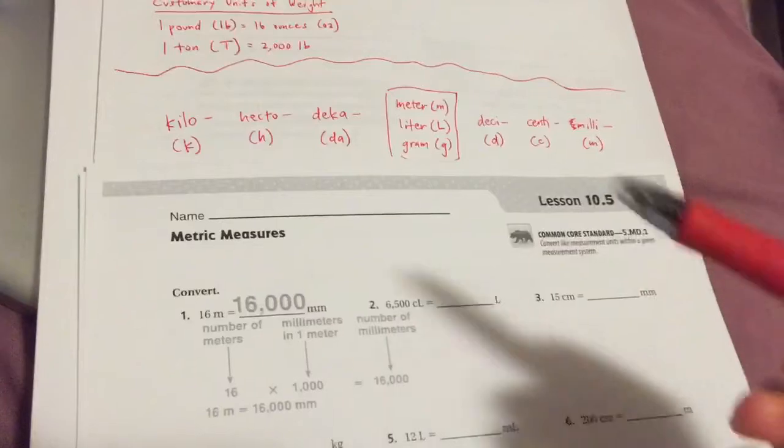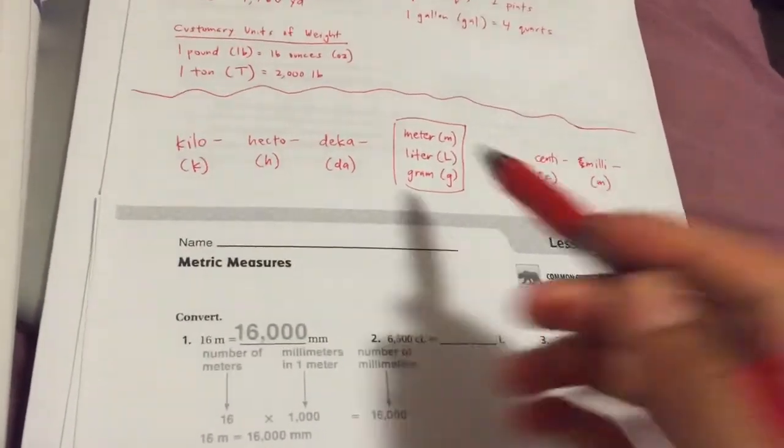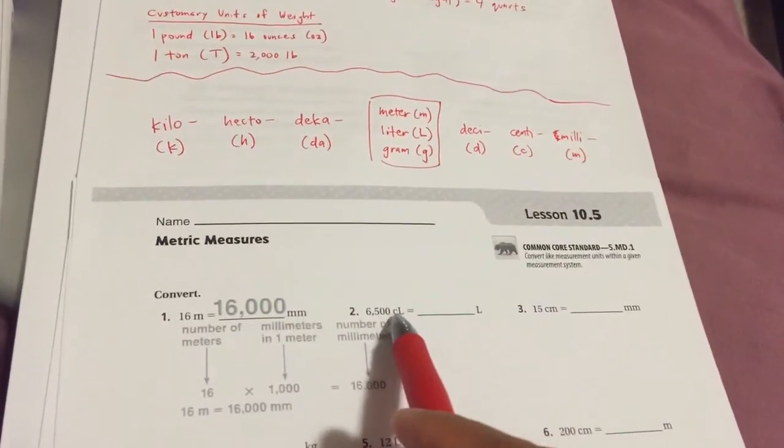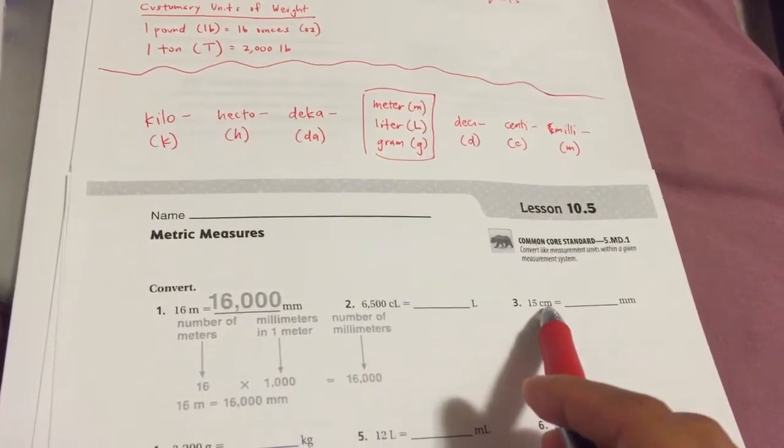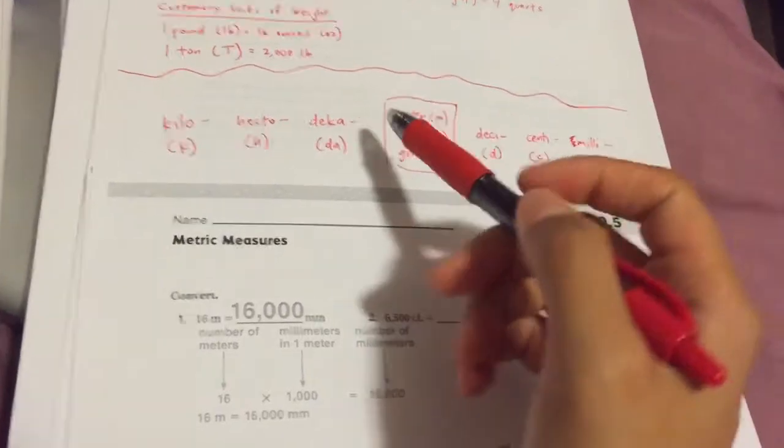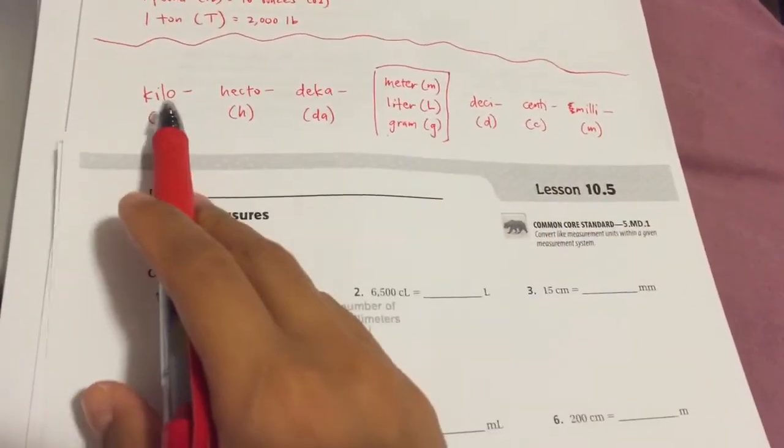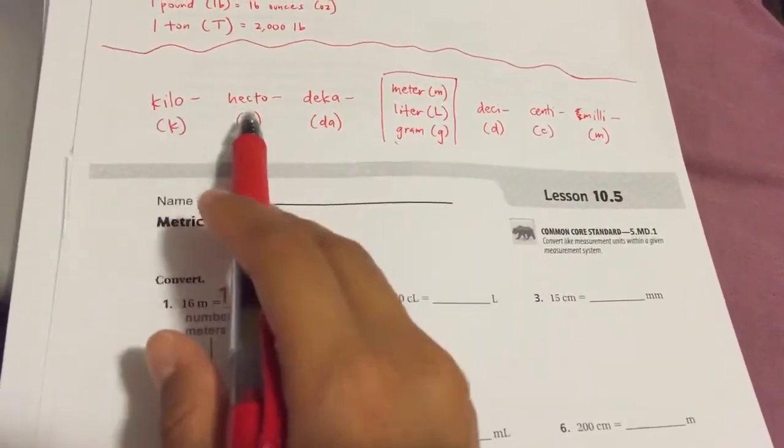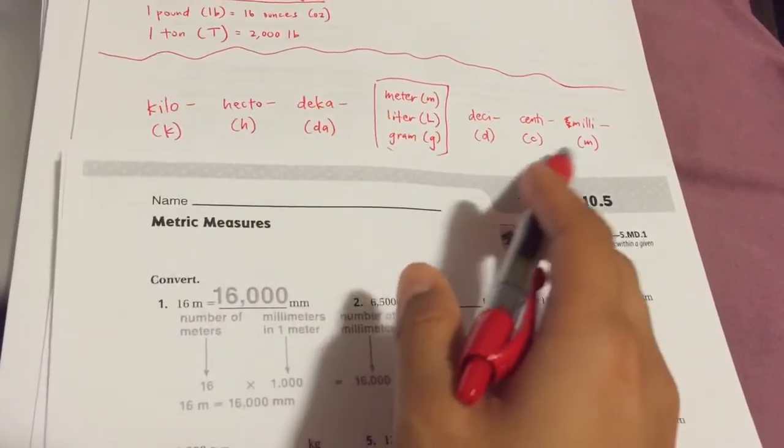So how do we set up these equations? First we need to see what all these things mean. If you're looking on here, you see things like CM, MM, a big L, a CL. These are prefixes: K, H, D, A, D, C, M.